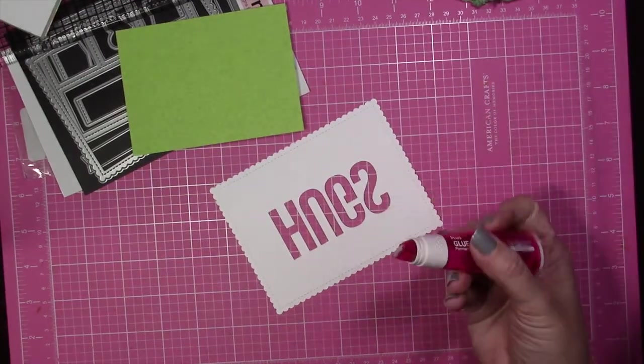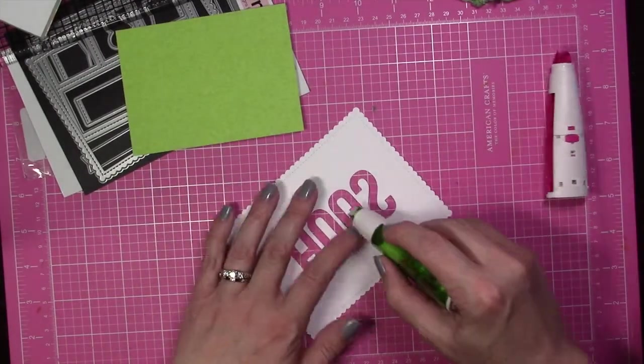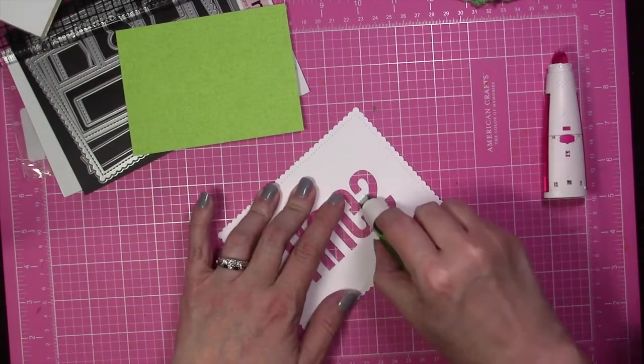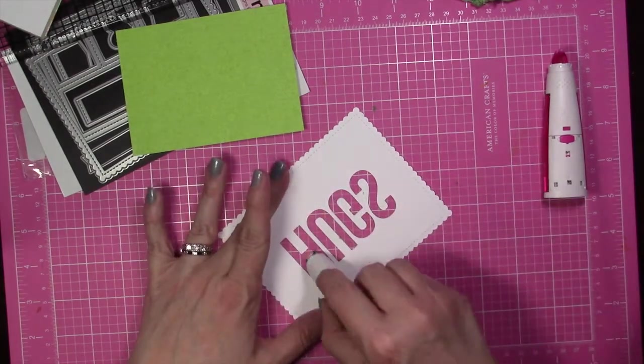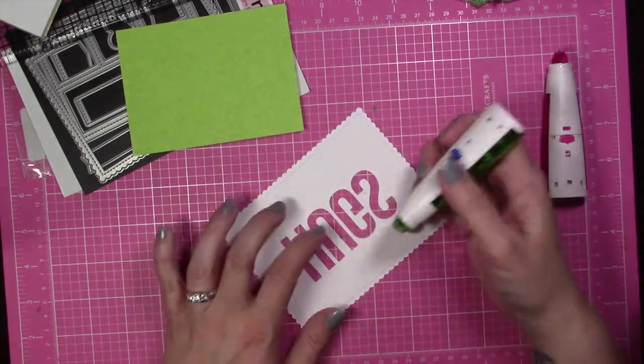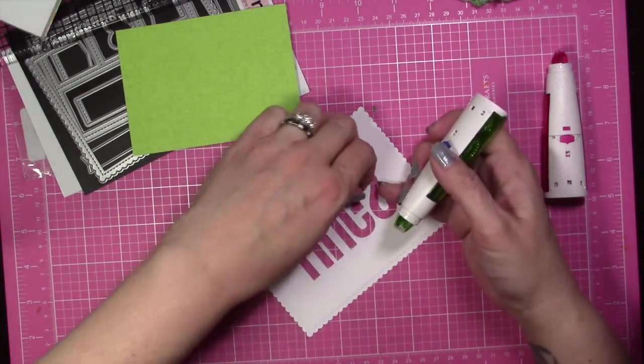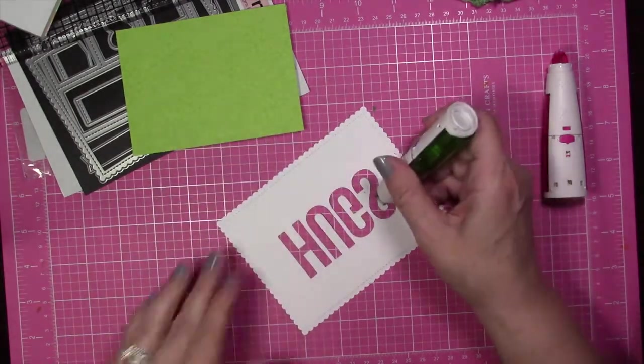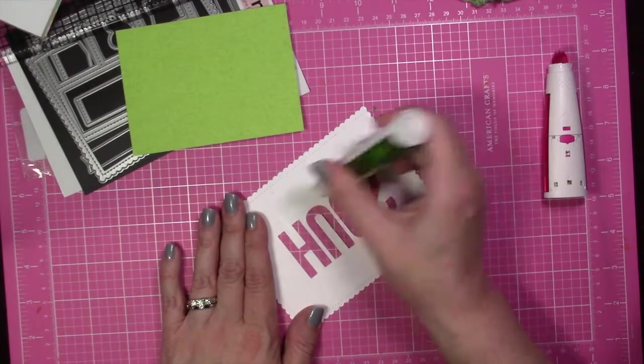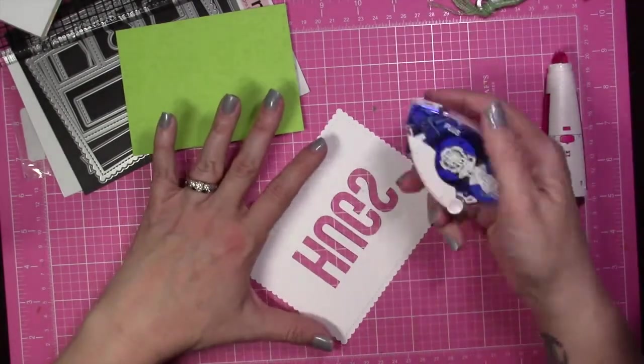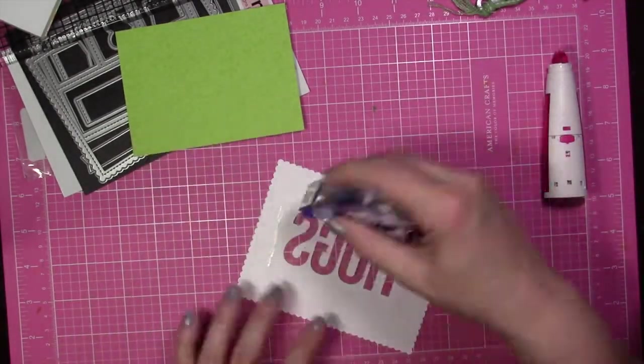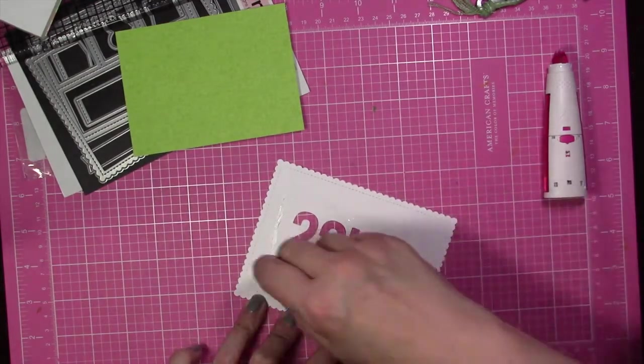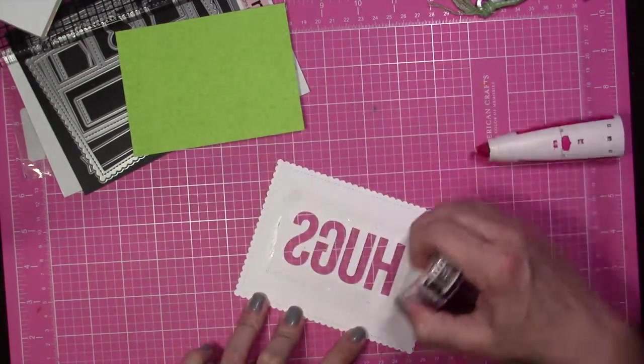I'm going to add some thin adhesive around the opening of the words, those thin little parts that are in between the letters there to make sure it adheres very well. If I did this again, I would add some liquid glue in between the H and the U where there's a really thin line. Once I had it down on my paper, it didn't stick very well so it was kind of bubbling up some.